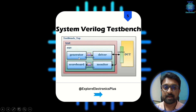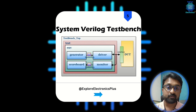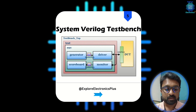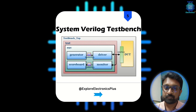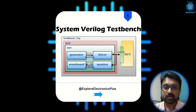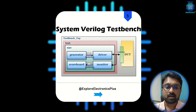Once the generator produces those packets — also called transactions — they are given to the driver. The driver drives the inputs to the DUT through an interface, and the output of the DUT is taken through the interface to a monitor. The monitor keeps monitoring the set of inputs and outputs from the DUT — its job is to collect outputs from the DUT. The driver's job is to drive inputs to the DUT. The scoreboard then gives the score of the verification, indicating whether the test performed on the DUT has passed or failed. These are the features in System Verilog that are advantageous compared to Verilog.